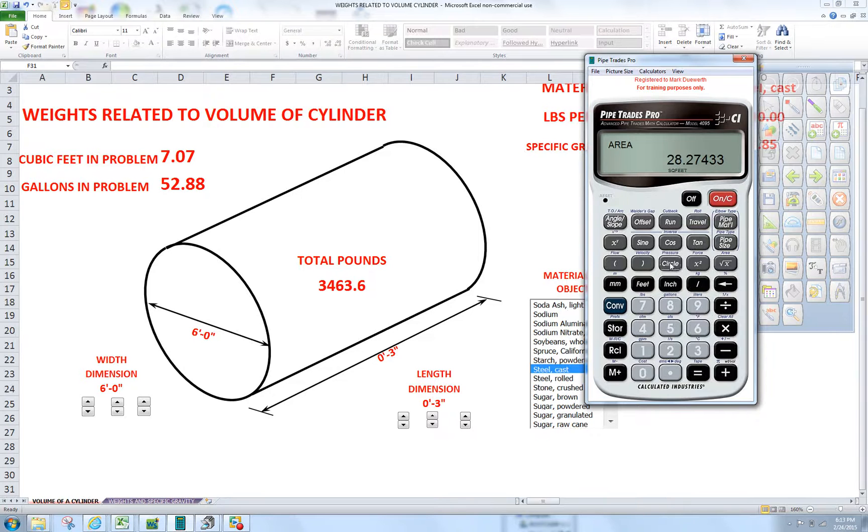We press circle key again. It gives me the area, so it did radius squared times pi. And now our depth of our cylinder is three inches thick, so we times it by three inches, and that gives us our volume of that cylinder.